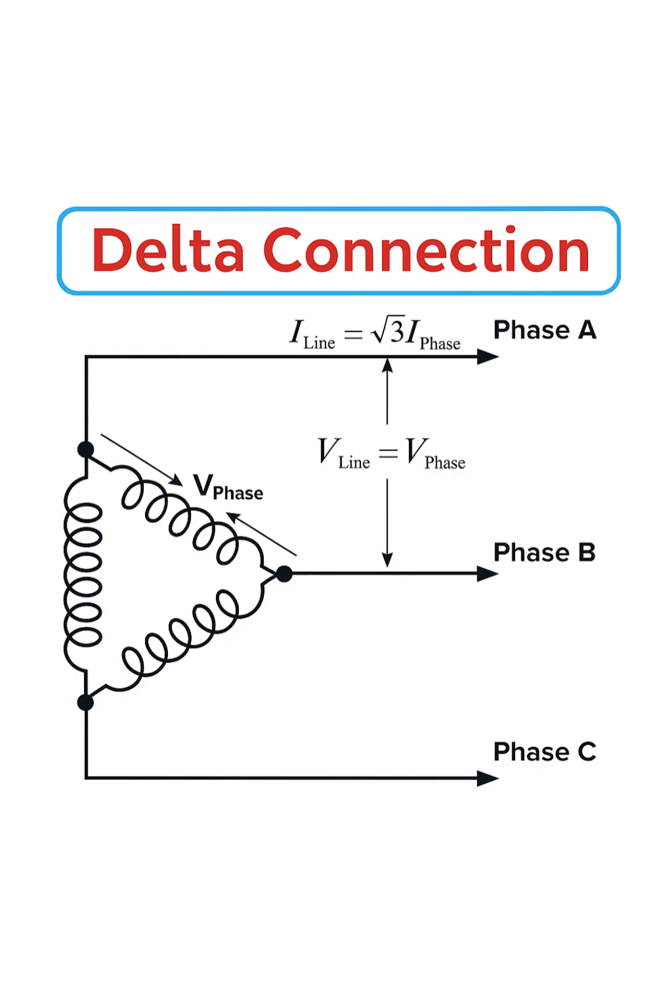So, to quickly summarize the two key rules for a delta connection, which are the opposite of a star connection: the line voltage equals the phase voltage, and the line current equals the square root of three times the phase current. Thanks for watching.